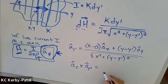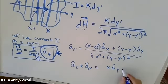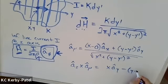So z cross x is going to give me a positive y, so I'm going to end up with x a hat y. And z cross y gives me a minus x, so it's going to be minus (y minus y prime) a hat x.